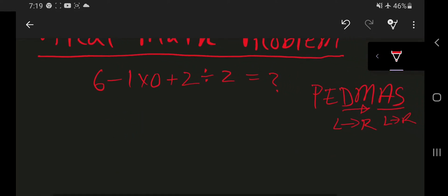So, at first we have to work on parenthesis but there is no parenthesis. Then we have the exponent but there is no exponent here. Then we have division and multiplication. So, here multiplication and division.